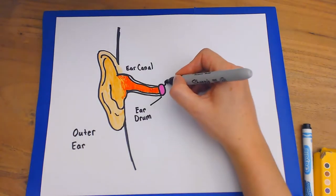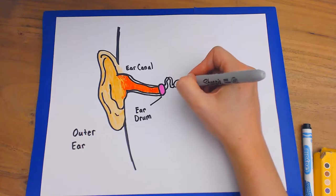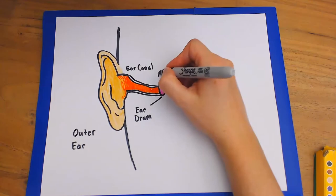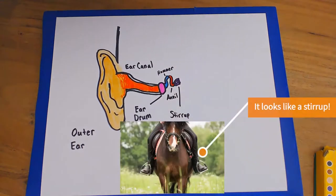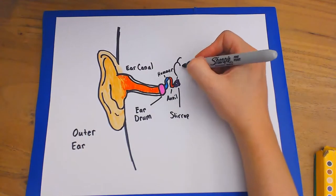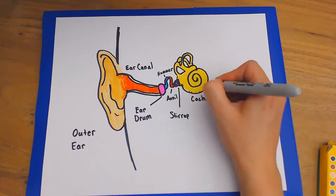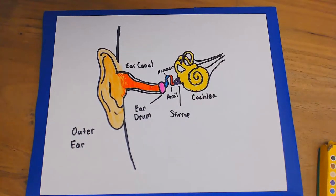This begins yet another chain reaction. The vibration of the eardrum shakes a tiny bone next to it called the hammer, which shakes a tiny bone next to it called the anvil, which shakes another tiny bone next to it called the stirrup. The stirrup stirs up waves of liquid inside a spiral snail-like structure called the cochlea. These waves move tiny hairs attached to the walls of the cochlea. A nerve senses the hair's movement and sends this information to your brain, which recognizes it all as sound.